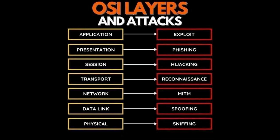The second layer is the Data Link Layer. The attack type at this layer involves handling framing and addressing data on the network. Attacks here include MAC address spoofing, ARP poisoning attacks, and Ethernet-based attacks, such as a man-in-the-middle attack at this layer.